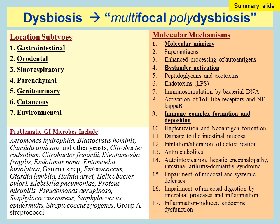When patients are removed from that microbial exposure, their autoimmune disease often disappears or goes into remission — providing good evidence of a cause-and-effect relationship. Some of the more problematic microbes I've seen in clinical practice include Aeromonas hydrophila, Blastocystis hominis, Candida albicans and other yeasts, Citrobacter freundii, Dientamoeba fragilis, Endolimax nana, Entamoeba histolytica, and gamma strep. Giardia lamblia has been associated with reactive arthritis as well.